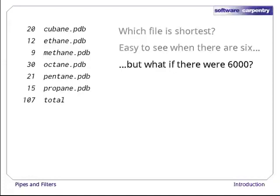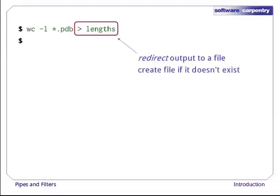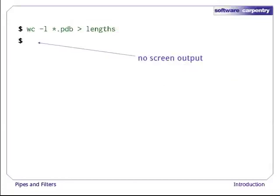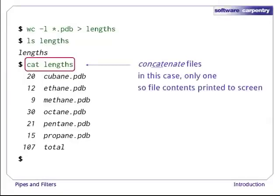Our first step towards a solution is to run the command wc -l *.pdb > lengths. The greater-than sign tells the shell to redirect the output to a file instead of printing it to the screen. The shell will create the file if it doesn't exist, or overwrite its contents if it does. Notice that there is no screen output — everything that wc would have printed has gone into the file lengths instead. ls lengths confirms that the file exists, and we can print its contents to the screen using cat lengths. cat stands for concatenate — it prints the contents of files one after another.